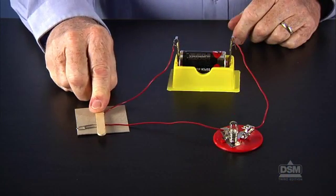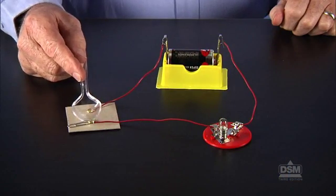Furthermore, encourage the class to think about how most conductors are made of metal and that paper, wood, rubber, and plastic are poor conductors of electricity.